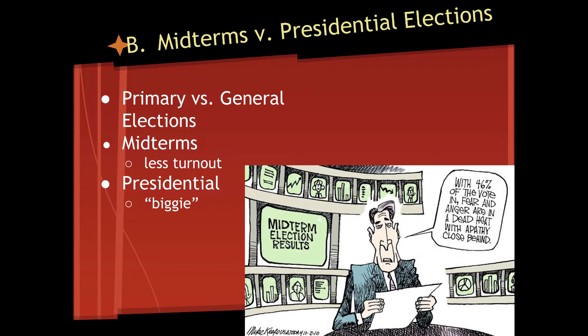Using our current examples: on Monday we had the Democratic primary, where Biden, Tulsi, and Bernie were all vying for the Democratic nomination. In November, whoever the nominee is — probably Biden — will compete against Donald Trump in the general election to see who is going to win the presidency.